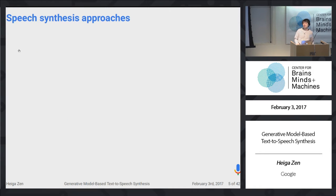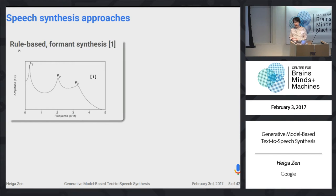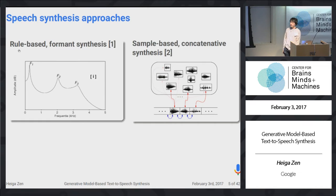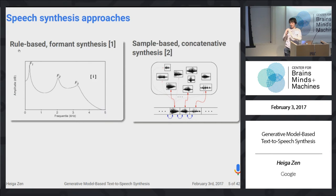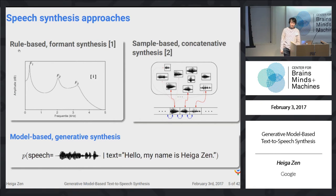There are three major approaches in the speech synthesis part. The first is rule-based formant synthesis: we extract rules from data and manipulate formant frequencies or durations. The second is sample-based concatenative speech synthesis: we record a large amount of speech data, segment it into small chunks, then define target cost and concatenation cost to find the best unit sequence given the linguistic information. The third approach is model-based speech synthesis.